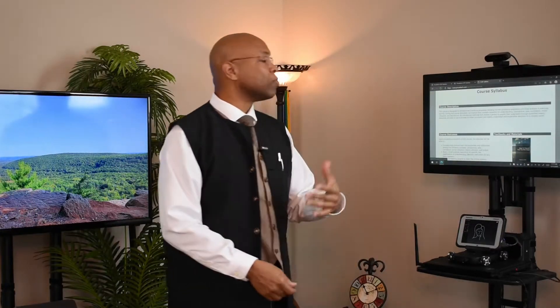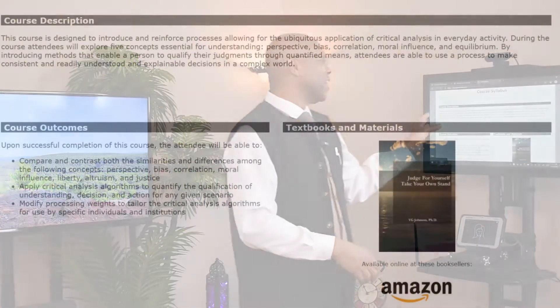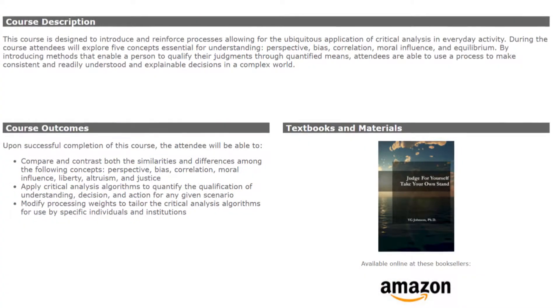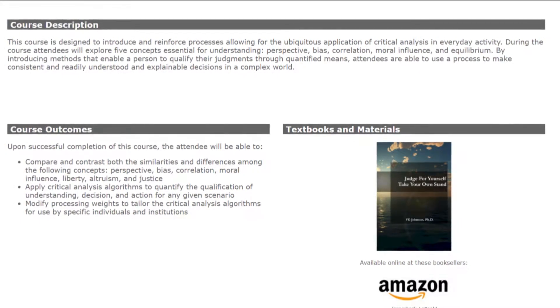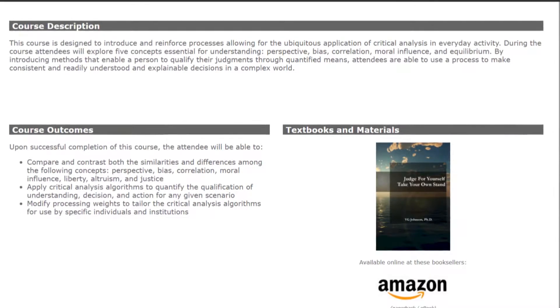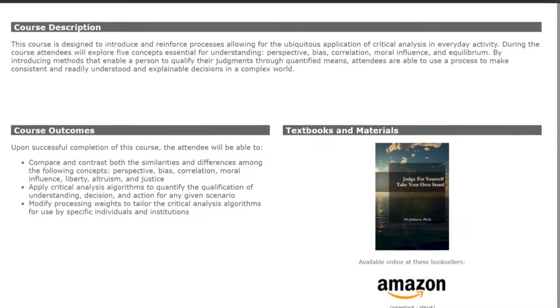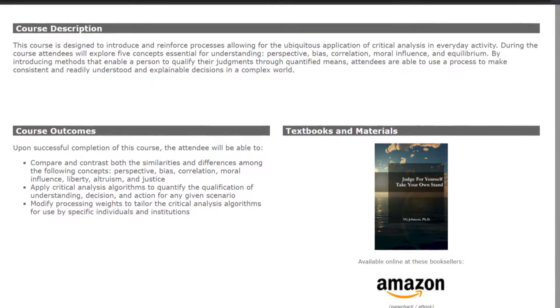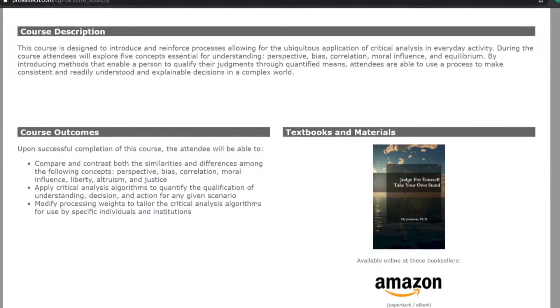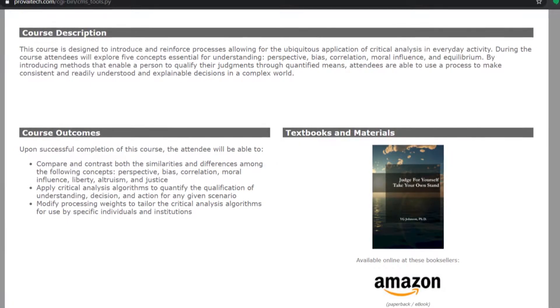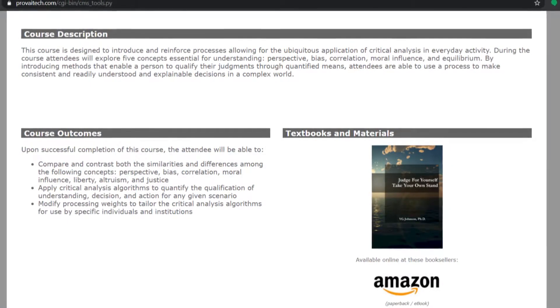What are we actually talking about here? We're having a course description. What we're actually doing here is covering critical analysis. As if you didn't know that already. I've been saying it forever. However, we're talking about the ubiquitous application of critical analysis for perspective and bias, correlation, moral influence, and the equilibrium of liberty, altruism, and justice. How you can apply them in everyday scenarios, how it might apply, where you might be seeing it used, so on and so forth.